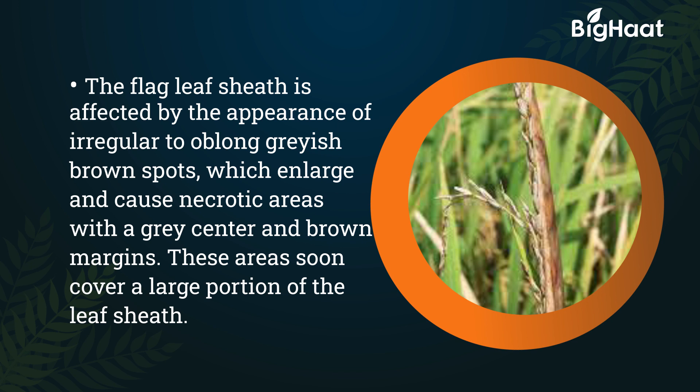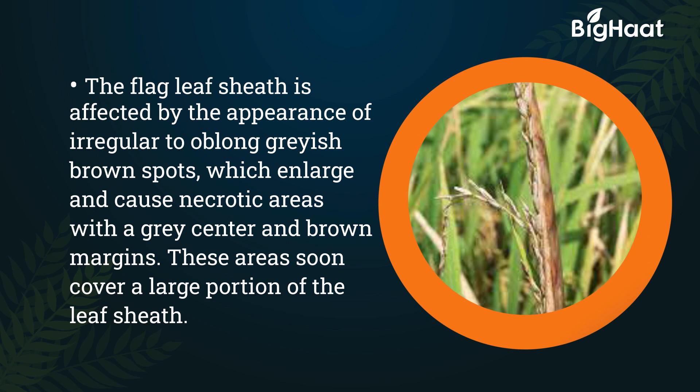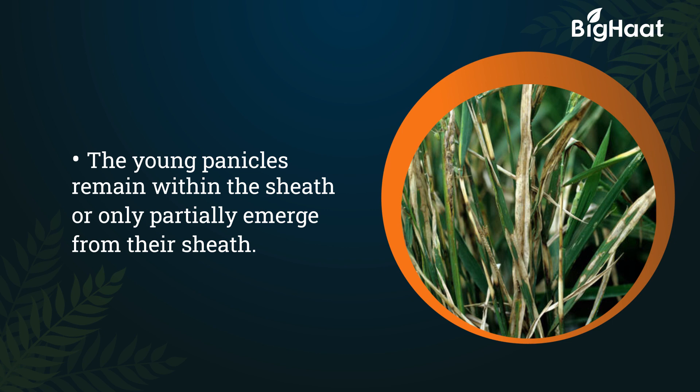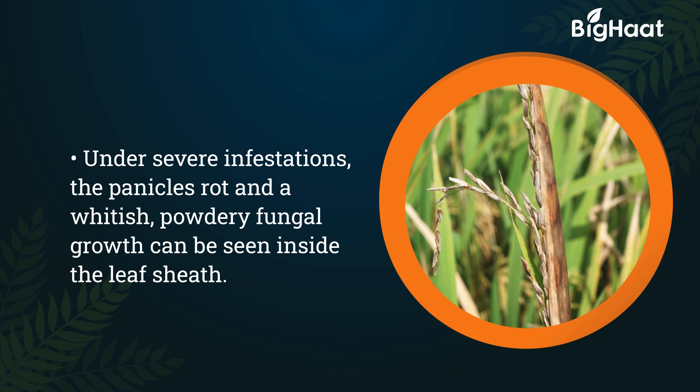These spots enlarge and cause necrotic areas with a gray center and brown margins, which soon cover a large portion of the leaf sheath. The young panicles remain within the sheath or only partially emerge. Under severe infestations, the panicles rot and a whitish-powdery fungal growth can be seen inside the leaf sheath.